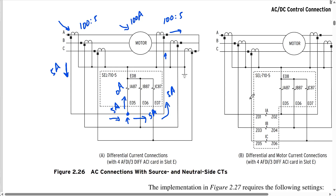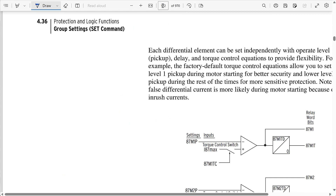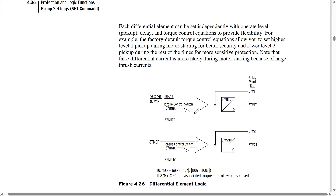Now that we know how these schemes operate from a wiring point of view, let's look at how the differential element operates. We can find that on page 172 of the instruction manual — note that page numbers may change in future versions but the content typically stays similar. In this scheme, since we handle the differential current external to the relay, the differential protection element within the relay is really just a simple definite-time overcurrent element: we read the current on the differential CT inputs, compare it to a predetermined threshold, and trip after some time delay.